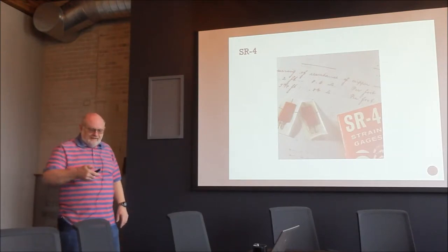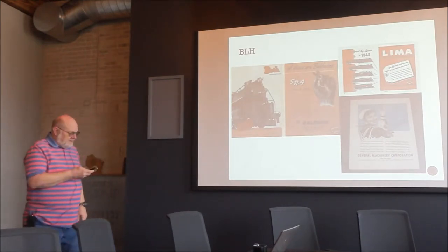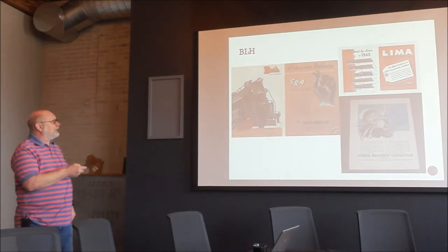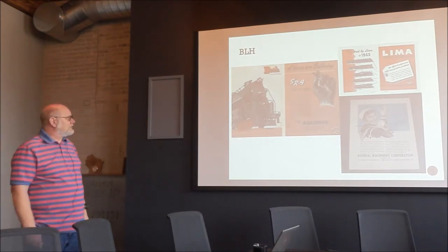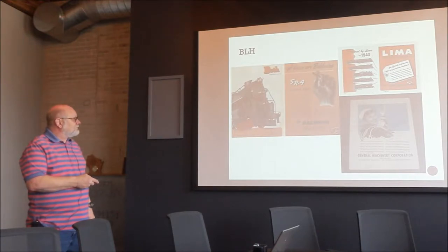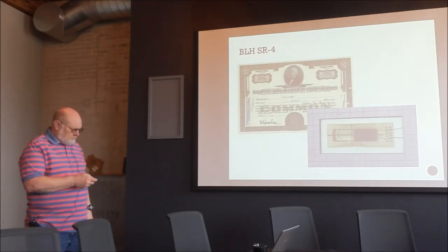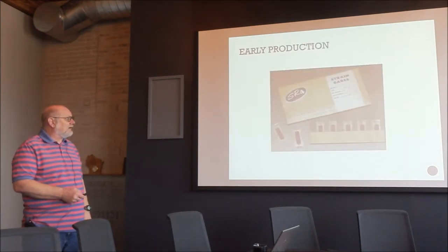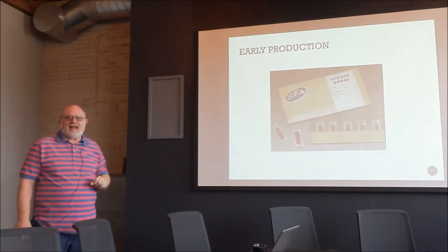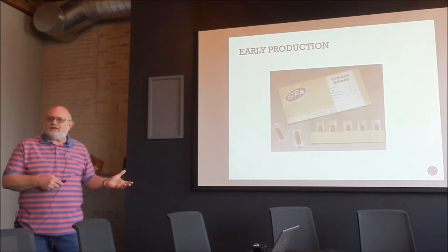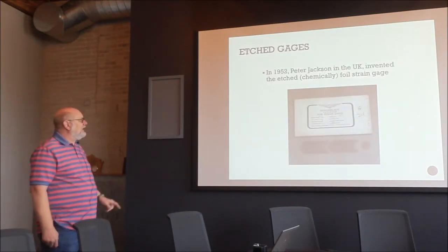Early SR4 publications are shown here. Baldwin eventually merged with Lima and Hamilton — BLH — who also made massive tensile testing machines to support their railroad efforts. The free-filament element is visible in the original gauges, and you can still buy that old packaging on eBay today — someone has a supply sitting around from almost day one.